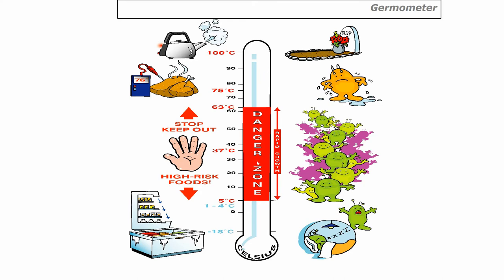Any high-risk food kept in the danger zone has the potential for bacteria to grow to large numbers. The ideal temperature for bacterial growth is 37 degrees C. Below that it's a bit cool; from 5 degrees C they start to wake up and multiply slowly; around 20 to 30 degrees it increases; 37 is ideal. Above 37 it becomes too hot — they stop multiplying and start dying around 50 to 55 degrees, and by 63 degrees C they are all dead.